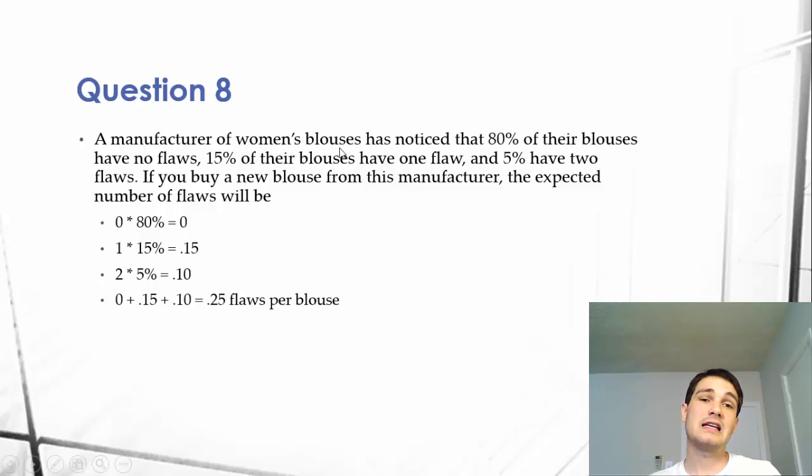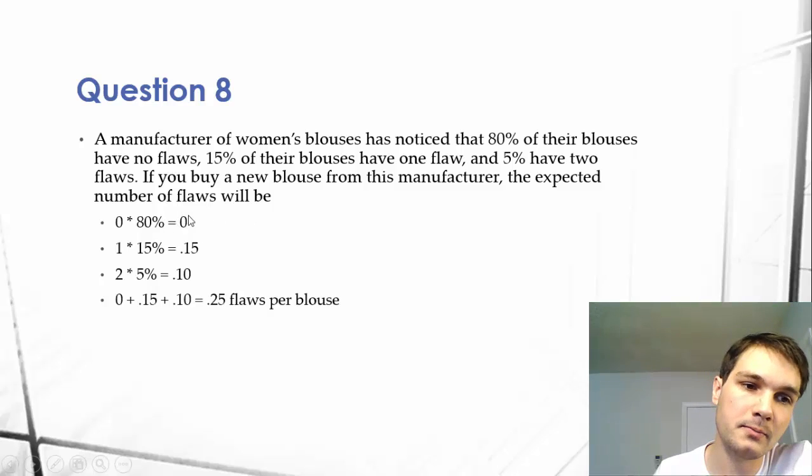So there's an 80% chance of no flaws. We take the zero flaws and multiply that by the 80% chance, and we get zero for that. That's our weighted average or expected value for the no flaws.